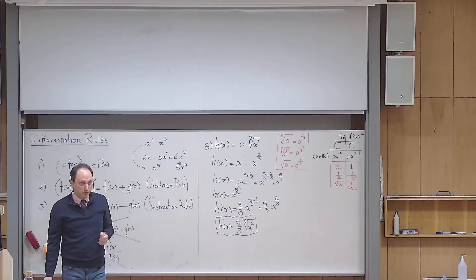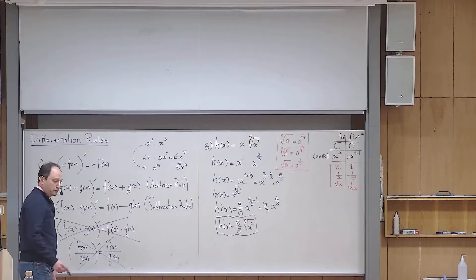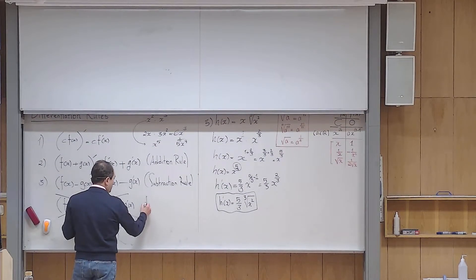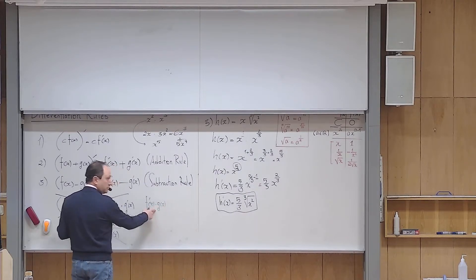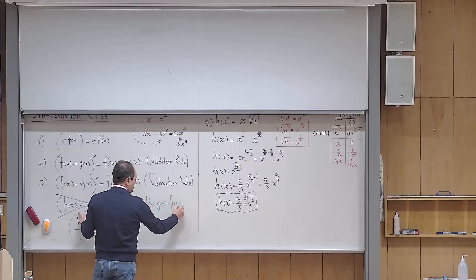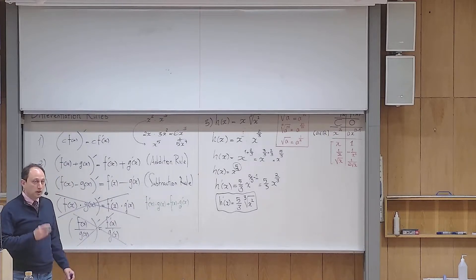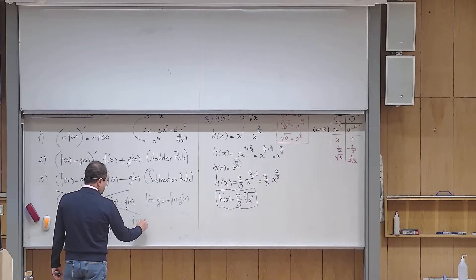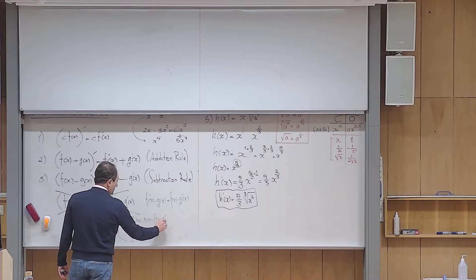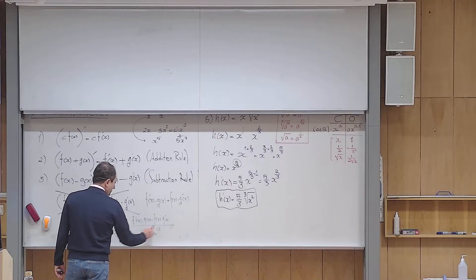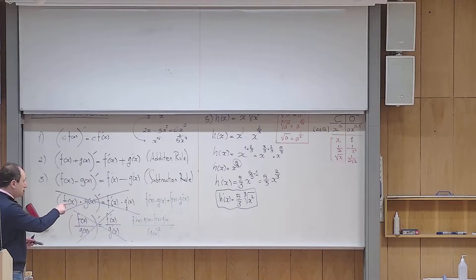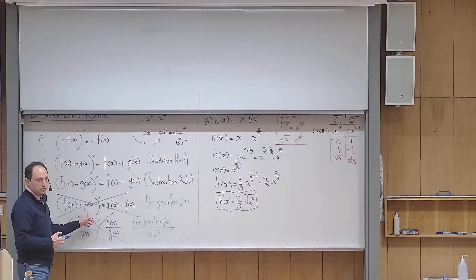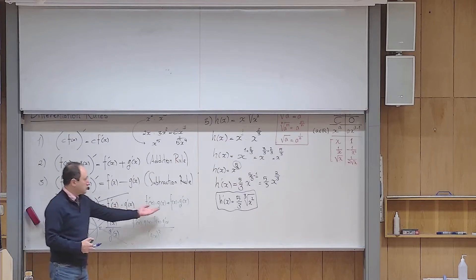The correct product rule is [f·g]′ = f′·g + f·g′, and the correct quotient rule is [f/g]′ = (f′·g − f·g′)/g². These are the correct formulas. The crossed-out versions are wrong. We will study these in Math 4, not Math 3.